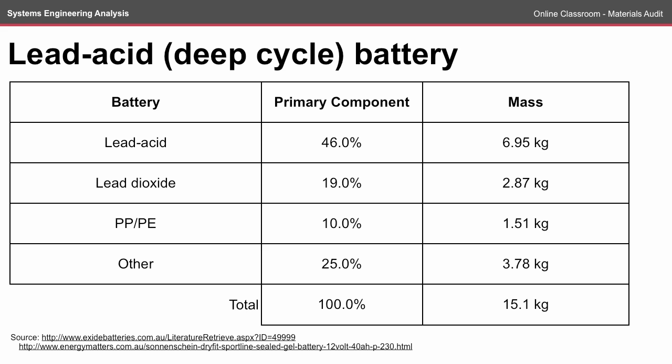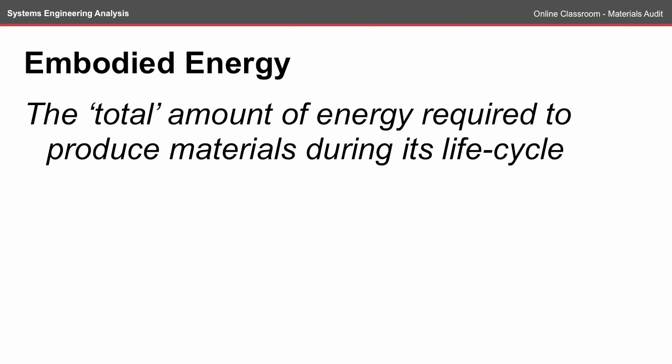The lead acid deep cycle batteries are a lot heavier, coming in at double the weight of the lithium batteries. The primary component is lead, which accounts for 6.95 kilograms of that 15 kilograms. To compare the two batteries, we look at the embodied energy of the materials.